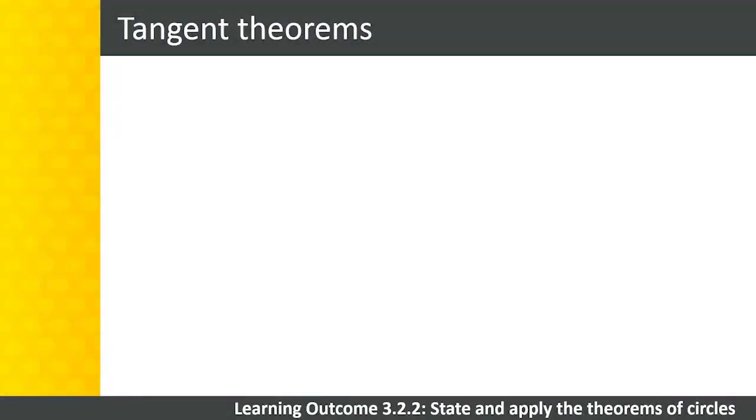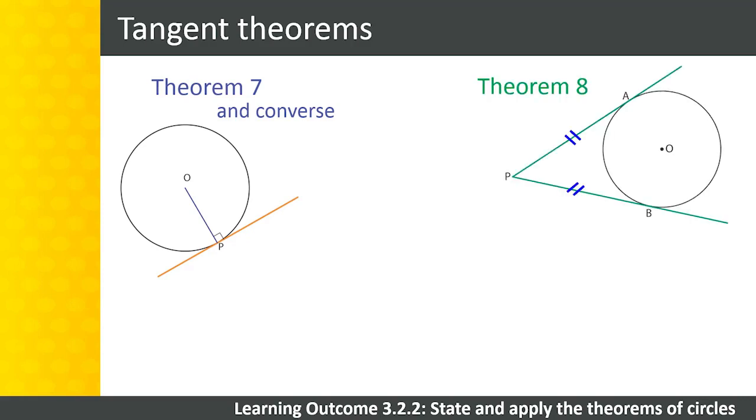To summarize the tangent theorems: Theorem 7 states that the tangent to a circle is perpendicular to the radius drawn to the point of contact. Theorem 8 states that two tangents to a circle from the same point are equal in length. Theorem 9 states that the angle between a tangent and a chord is equal to the angle in the alternate segment. The converse of Theorem 9 states that if the angle between a line drawn through the end point of a chord and that chord is equal to an angle subtended by the chord in the alternate segment, then the line is a tangent to the circle.